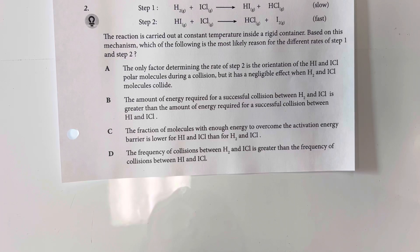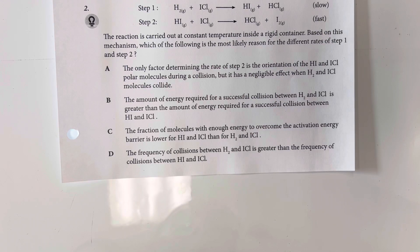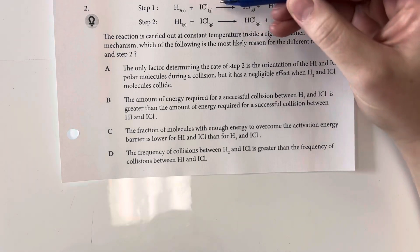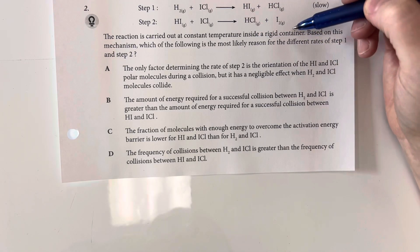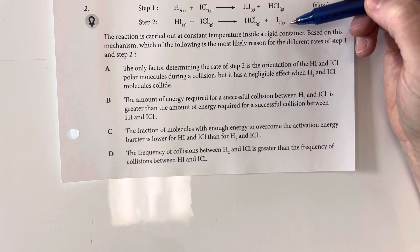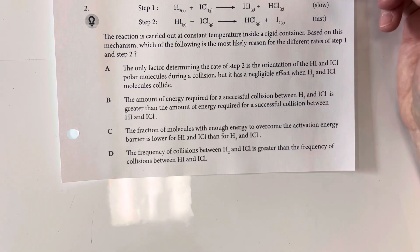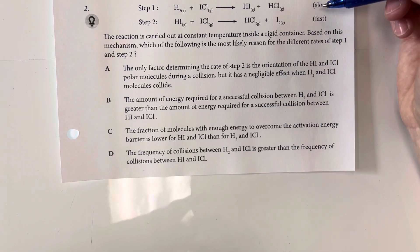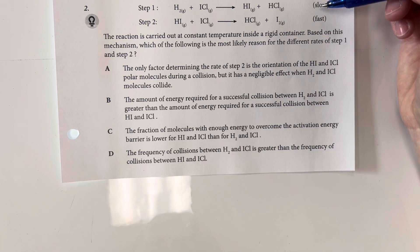The reaction is carried out at a constant temperature in a rigid container. Based on this mechanism, which of the following is the most likely reason for the different rates of step 1 and step 2? Step 1 is a slow reaction and step 2 is a fast reaction. A slow reaction means we have a higher activation energy and it is generally more difficult to get those reactions to start.